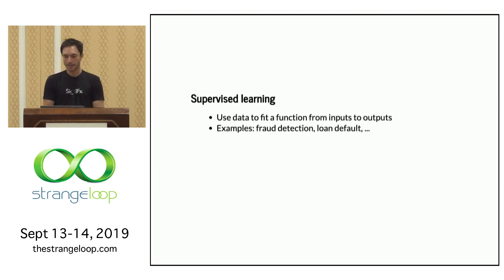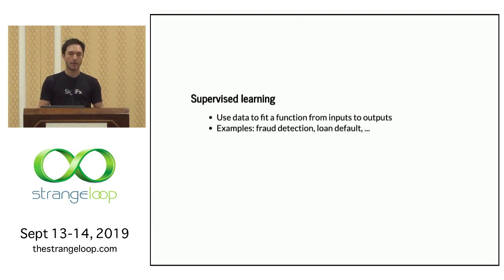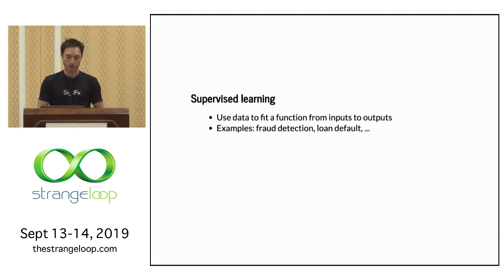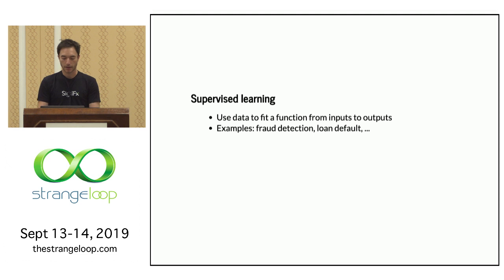The overall idea of supervised machine learning is to use data to fit a function that describes some outputs of interest as a function of inputs which can be observed. For example, fraud detection: given an incoming transaction on a credit card, you'd like to infer from various attributes — like the history of the card or the merchant — how likely the transaction is to be fraudulent.